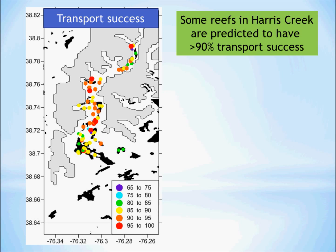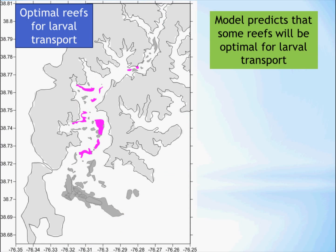These reefs would be very good for jump-starting oyster populations in the Choptank River. Many factors are involved in choosing sanctuaries and restoration sites within sanctuaries, including the adult populations there and their possibility for survival dependent on disease, and also the availability of suitable bottom and the cost of prepping the bottom for each individual oyster reef.